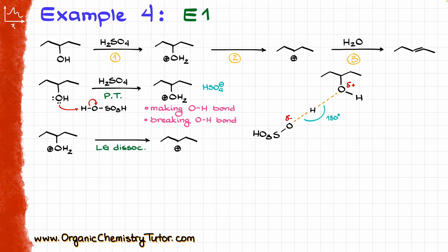Moving on to my next step, that one is going to be a leaving group dissociation. Like any leaving group dissociation, it's a very simple step: we just take the electrons, give those to our leaving group, and it pops off. We are breaking the carbon-oxygen bond. The transition state shows a dashed line for that bond, with a delta plus on both carbon and oxygen — carbon is gaining a positive charge and oxygen is losing that positive charge.